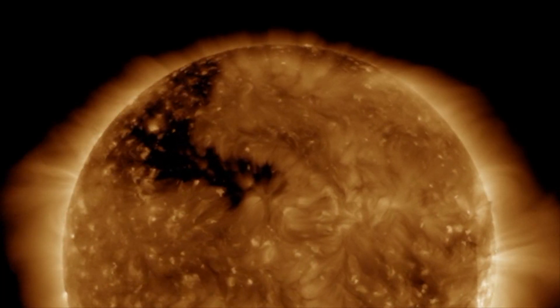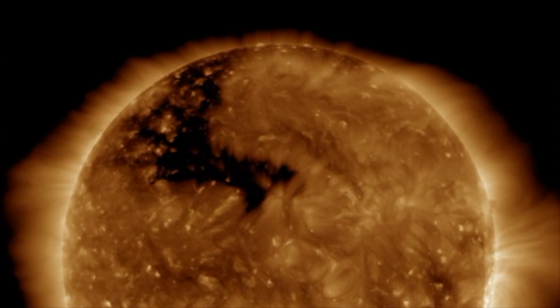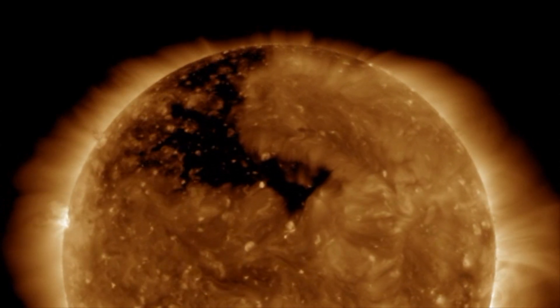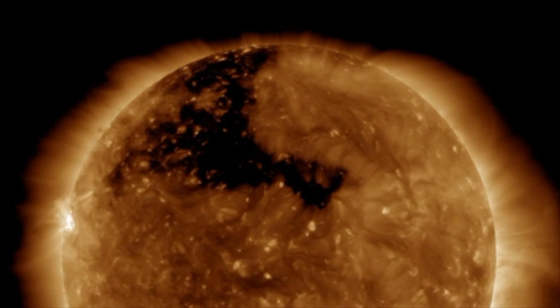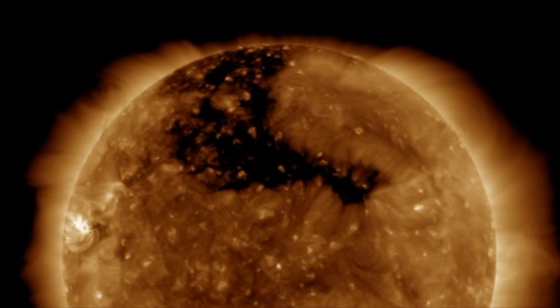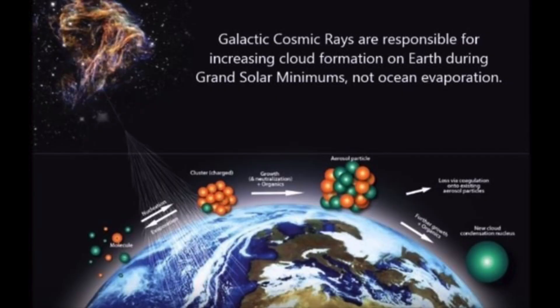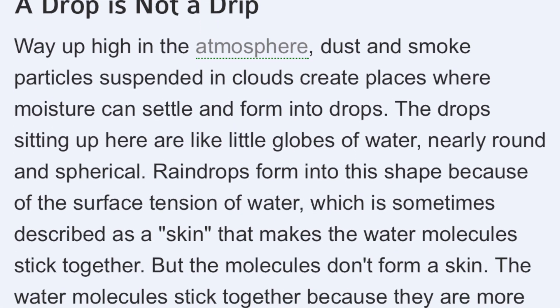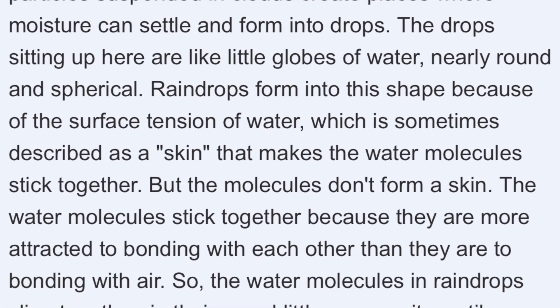Just the other day on the internet, I saw an interview with a solar physicist who told someone that cosmic rays do not impact climate. I want to read you a description of what causes a raindrop, off of a NASA education segment. It says: way up high in the atmosphere, dust and smoke and particles suspended in clouds create places where moisture can settle and form into a drop.